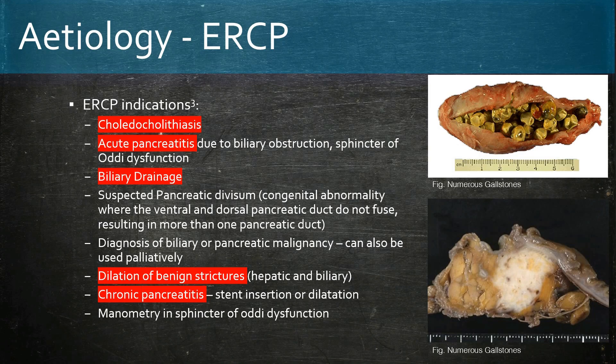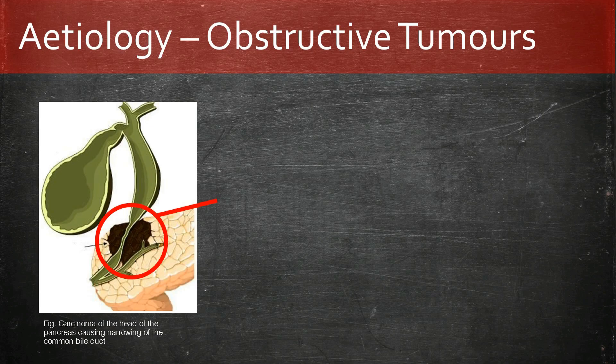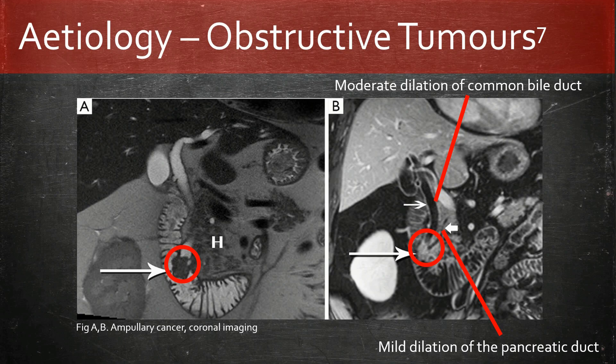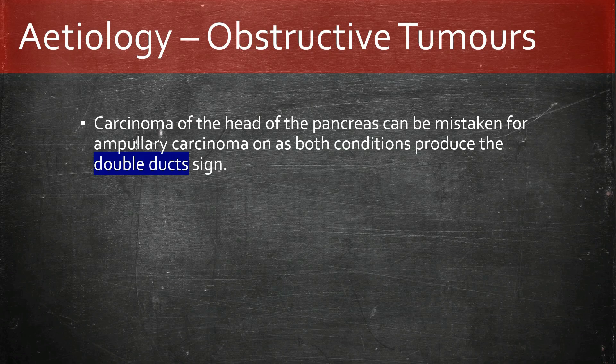Obstructive tumours such as cancer of the head of the pancreas can impinge on the common bile duct, creating a blockage in the same way as gallstones do. These images show ampullary carcinoma and subsequent dilatation of the common bile duct and the pancreatic duct. Both ampullary carcinoma and carcinoma of the head of the pancreas produce the double duct sign.